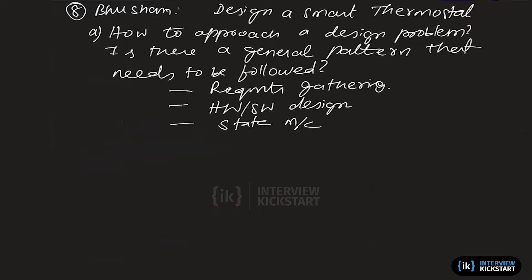A generic question: design a smart thermostat. How do you approach a design problem? Is there a general pattern that needs to be followed? Requirements gathering, hardware, software design, state machine — those are all the things. So basically, what is the purpose of this kind of open, one-line design question?